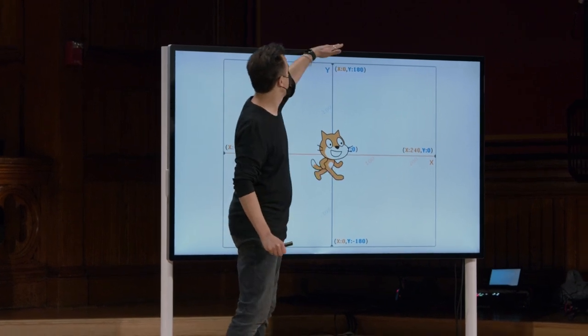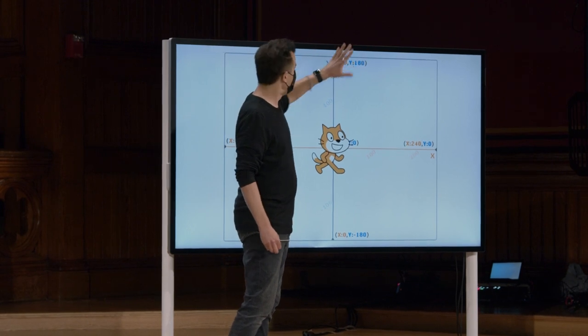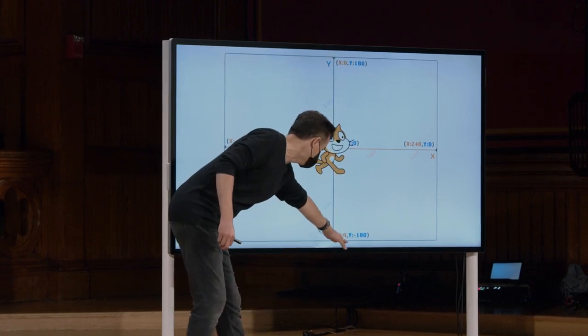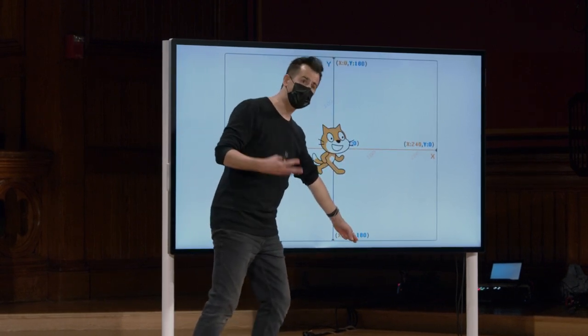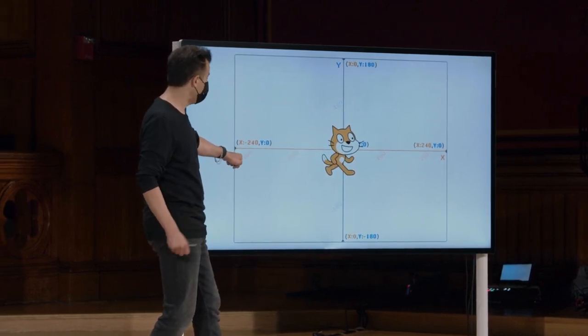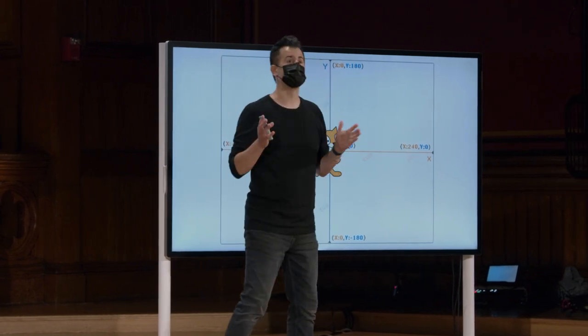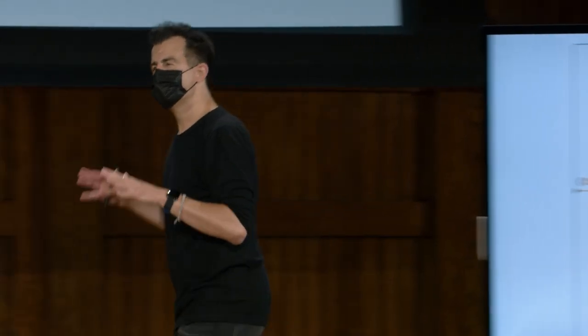Se você mover o gato até o topo, X permaneceria 0 e Y seria positivo 180. Se você mover o gato para baixo, X permaneceria 0, mas Y seria negativo 180. Se você fosse para a esquerda, X se tornaria negativo 240, mas Y permaneceria 0. Ou para a direita, X seria 240 e Y permaneceria 0.